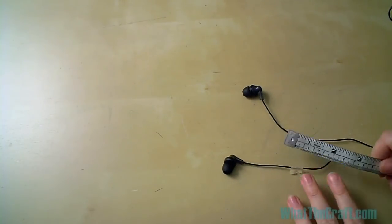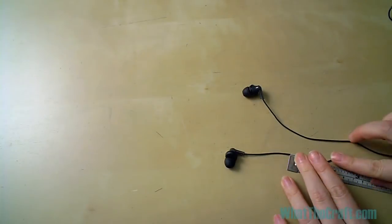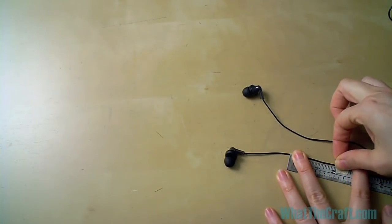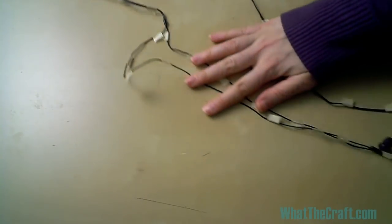Every two inches, I want to change colors. So I'm going to mark every two inches with a piece of masking tape. Once you get it all marked, we shall commence with the knotting.